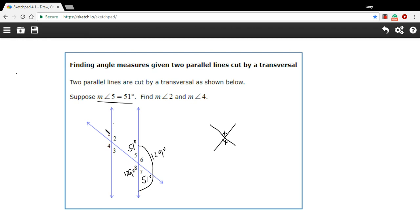So really, in a transversal figure like this where the two lines are parallel, you're really gonna only have two measures here, a big measure and a small measure. The small measure for us is 51, so the smaller angles over here are gonna be 51, and the bigger angles are gonna be 129.